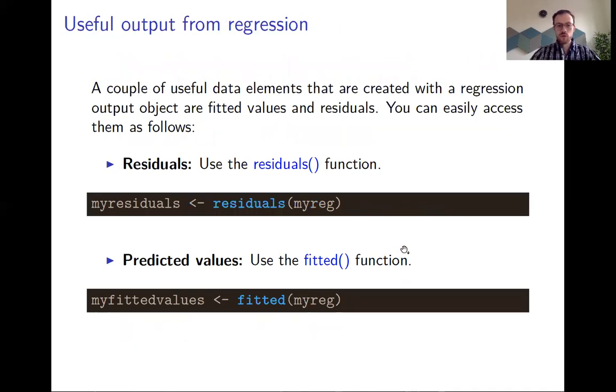Other important or useful functions that you can call on your regression output are residuals and fitted values. For residuals, you just call residuals on your regression output. You often need this, for example, if you would like to test for heteroskedasticity or autocorrelation in the errors. You can also get the fitted values by calling fitted on your output object. This is, for example, useful if you want to plot a regression line. You plot the data and afterwards you add a line that contains the fitted values from your regression.